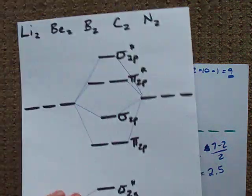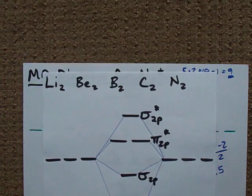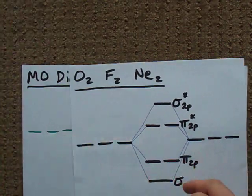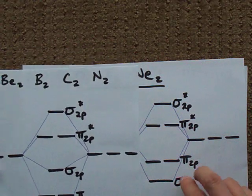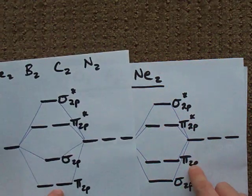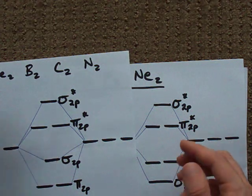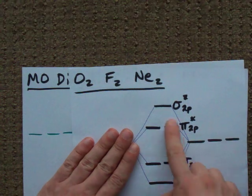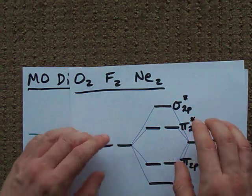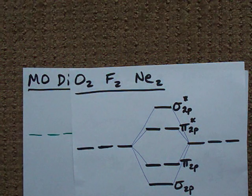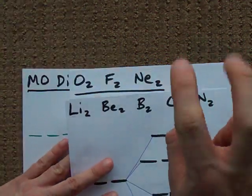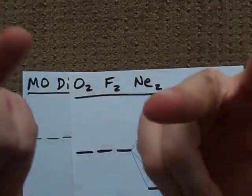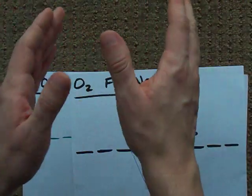I told you this was the MO diagram you had to memorize for lithium to nitrogen. The one for oxygen to neon is pretty much the same. The only difference is that oxygen to neon has the pi2p at a higher energy level. Why is that the case? Because these MOs and their relative order are based off of the differences in orbital energy levels, and those are different for every atom. It just so happens that the threshold to switch from this to this is between nitrogen and oxygen. Accept it — you're a mature, grown-up person. I know you can.